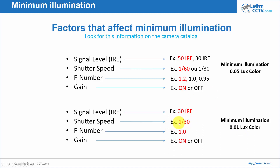The shutter speed issue is also real: if the camera is configured at 1/30, your image will be blurry with fast movement. With 1/60, something moving in front of the camera won't blur as much. And with the F-number, a lens with a 1.0 aperture lets in more light but is an expensive lens — you have to spend more money to buy it. So it's also misleading information.